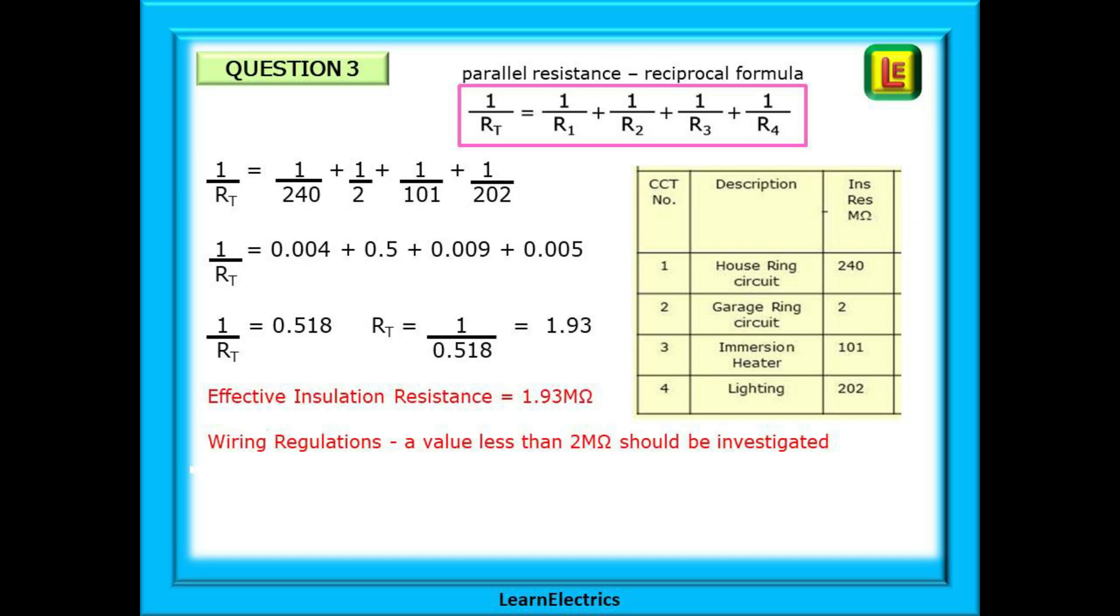The parallel resistance formula is shown at the top. You'll remember from last time that we add all the reciprocals of the circuits together. In other words we divide each individual insulation resistance into one, add them all up and then divide that answer into one. Follow the calculations on this page to arrive at an answer of 1.93 mega ohms. The numbers have all been rounded up or down to limit the number of decimal places. Don't worry too much about this. It will always be very obvious which answer to choose.